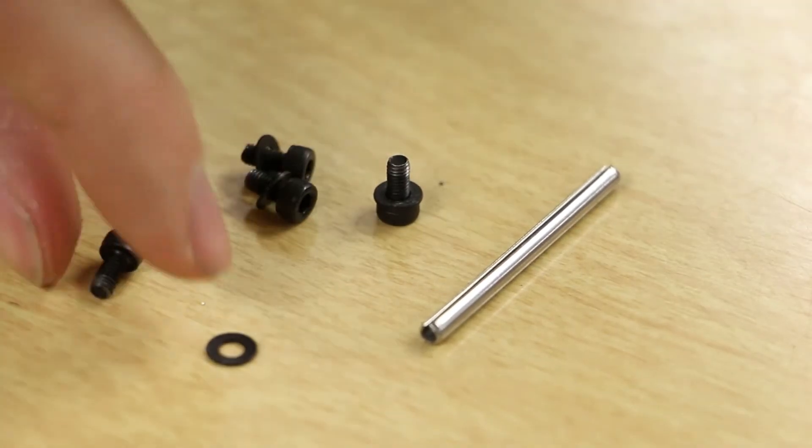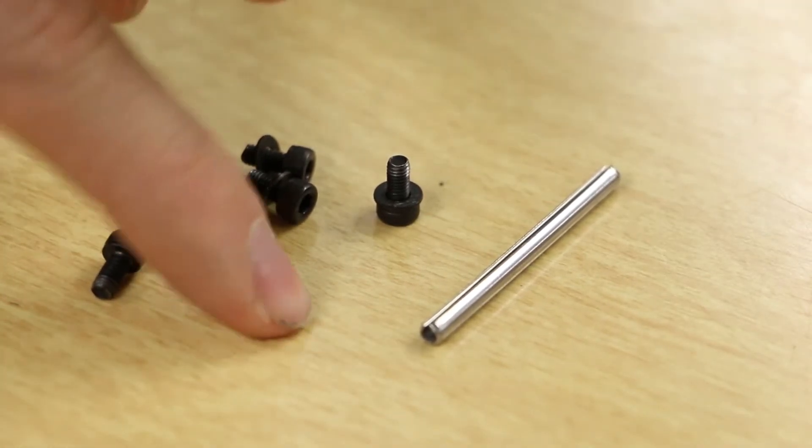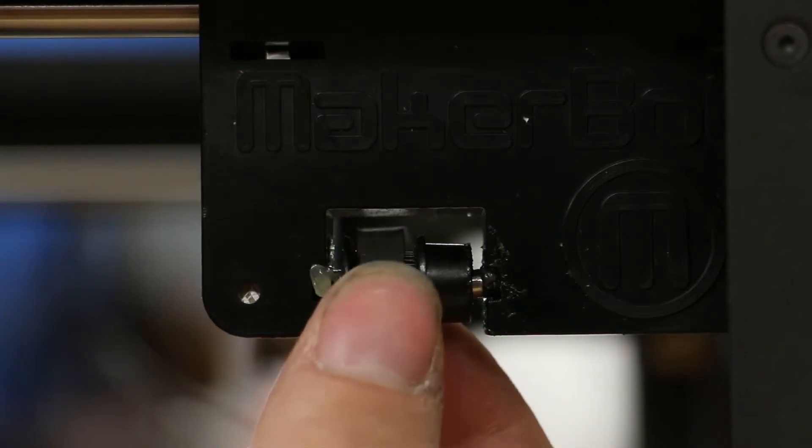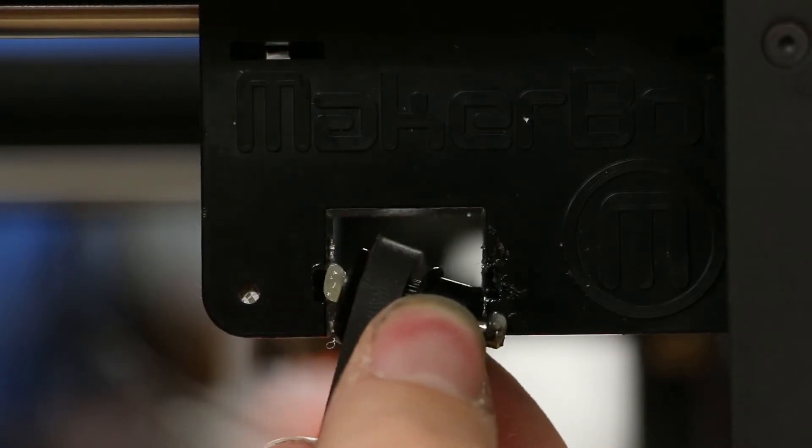Here you see the screws with their washers and the metal pin. On the other end of the belt there will be a plastic idler pulley with a metal rod going through it. Pull that out.